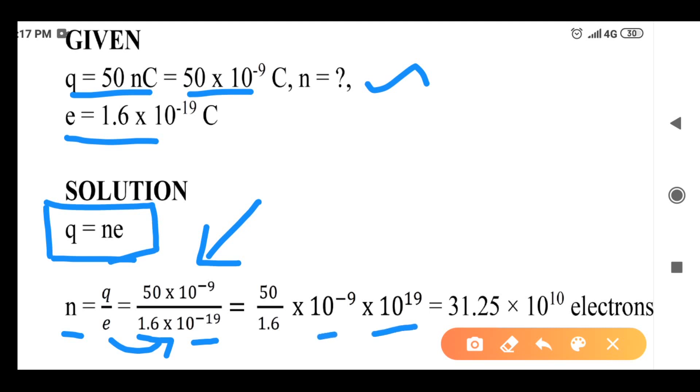If you have 10 power minus 9, you will get 10 power minus 9. So you have 10 power 10. 50 divided by 1.6, this value is 31.25. If you have direct divide,